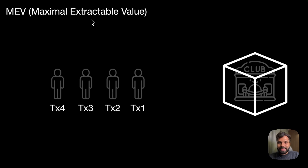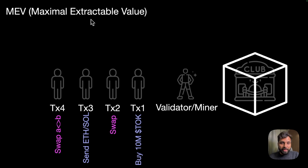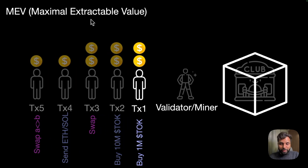Since this is a permissionless environment and open for anyone to see, there can be a scenario when the validator looks at the transactions and sees what they are doing. And if they see that there's going to be a large transaction, they can put their own transaction in place. As you can see over here, a validator has put a buy of 1 million TOK tokens before the 10 million TOK token order, so that they can sell the token after the price has increased after that huge token order.